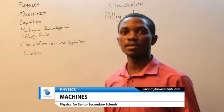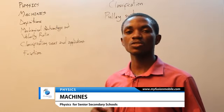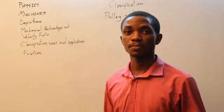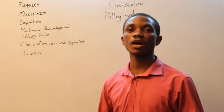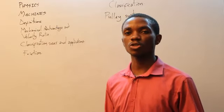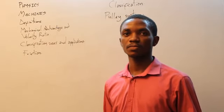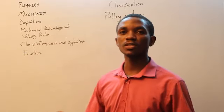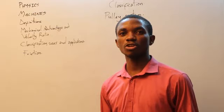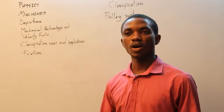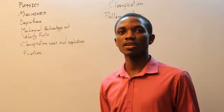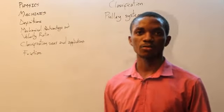In the pulley system, the velocity ratio is very easy to calculate or determine. All you need to do is count how many pulleys are in the system — how many pulleys are actually functional in the system. The number of pulleys present is the value for the velocity ratio, while your mechanical advantage is calculated in the usual way.